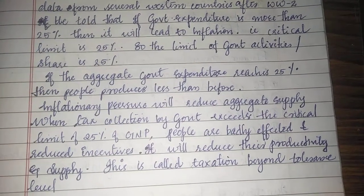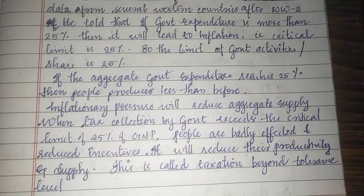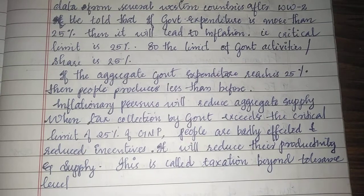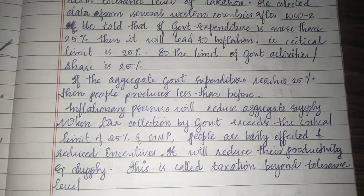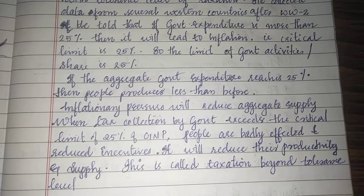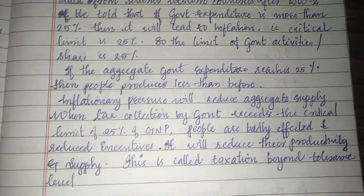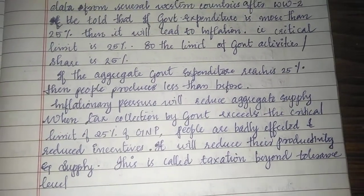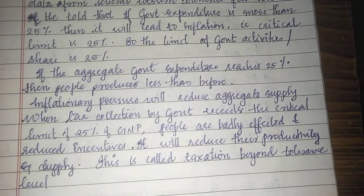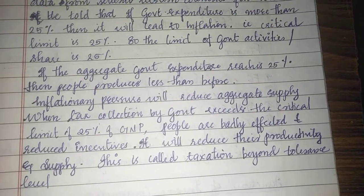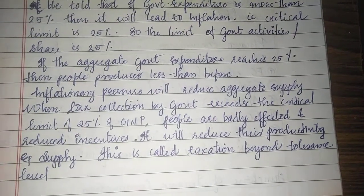People will be affected badly, and it will reduce their incentives, productivity, and supply. This situation is called taxation beyond the tolerance level.